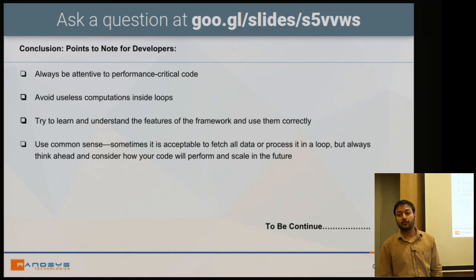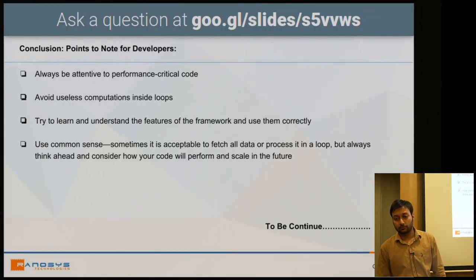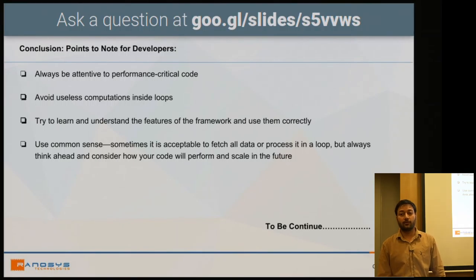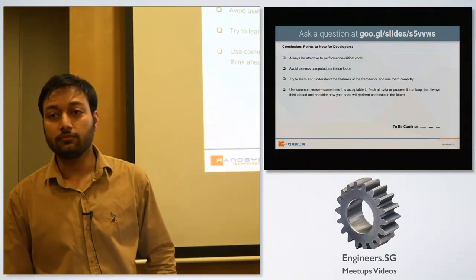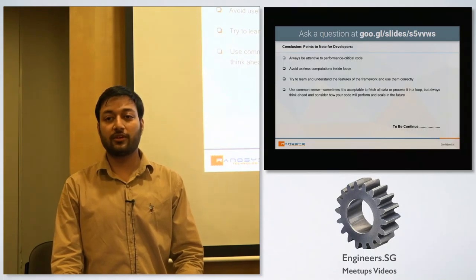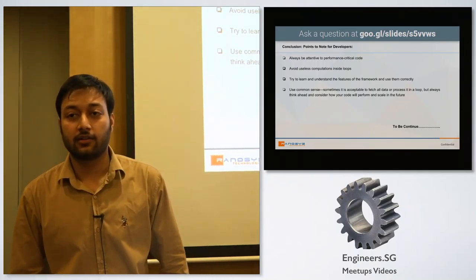Audience question about using HipHop (HHVM) in Magento. The speaker responded that they have not tried it, noting it was originally from Facebook and is supposed to run PHP functions faster. Since Magento 2 is compatible with PHP 7 as the standard, and Magento guidelines suggest running PHP from version 5.3 to 7, the speaker has not experimented with HHVM as a replacement.